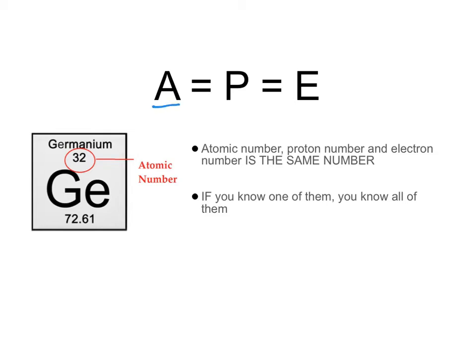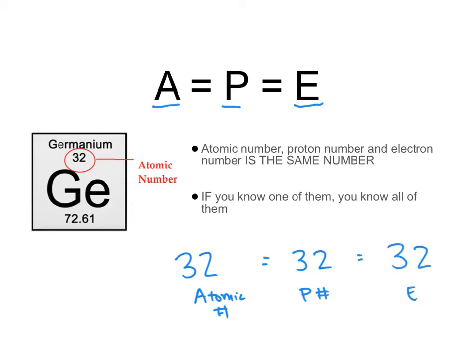Let's focus first on APE. APE says that the atomic number equals the proton number equals the electron number. So the number of protons and electrons in a balanced atom is the exact same number as the atomic number. Look at germanium — it has an atomic number of 32. So if you know the atomic number is 32, then you also know the proton number is 32 and the electron number is 32. They're the same number — no math required.